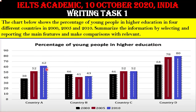The graph covers four countries: Country A, Country B, Country C, and Country D, across three years: 2000, 2005, and 2010. The black bars represent the year 2000, the red bars represent 2005, and the blue bars represent 2010. We will discuss all the bar graph data in the upcoming paragraphs.